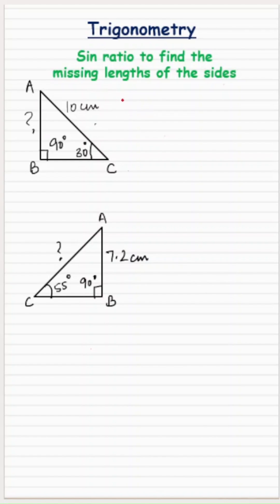Now since we are using sine ratio, sine of angle C will be equal to what is the sine ratio? It's the ratio of the opposite side to the hypotenuse.